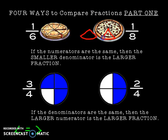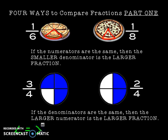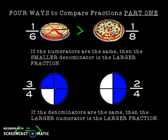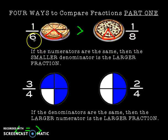Let me drag this over here and show you what I mean. You can see that if I give you a slice of this pizza over here, it's going to be a little bit bigger. Therefore, I know that one-sixth is bigger — is greater than one-eighth — because each part is a little bit bigger than each part here. So I compare my numerators: they're the same. Now I look at my denominators. The smaller number is the larger fraction.